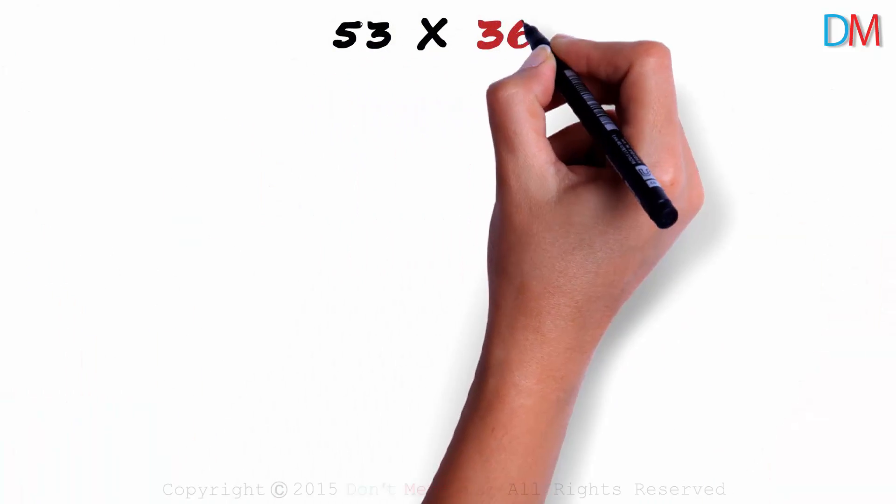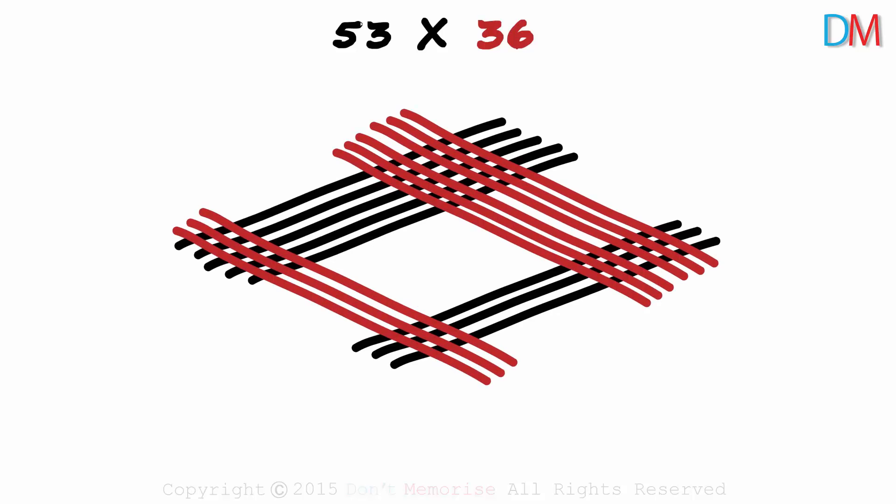Take the next example for instance. 53 times 36. Wait, don't draw the lines. This is how the figure will look. The black lines for 53 and the red ones for 36.